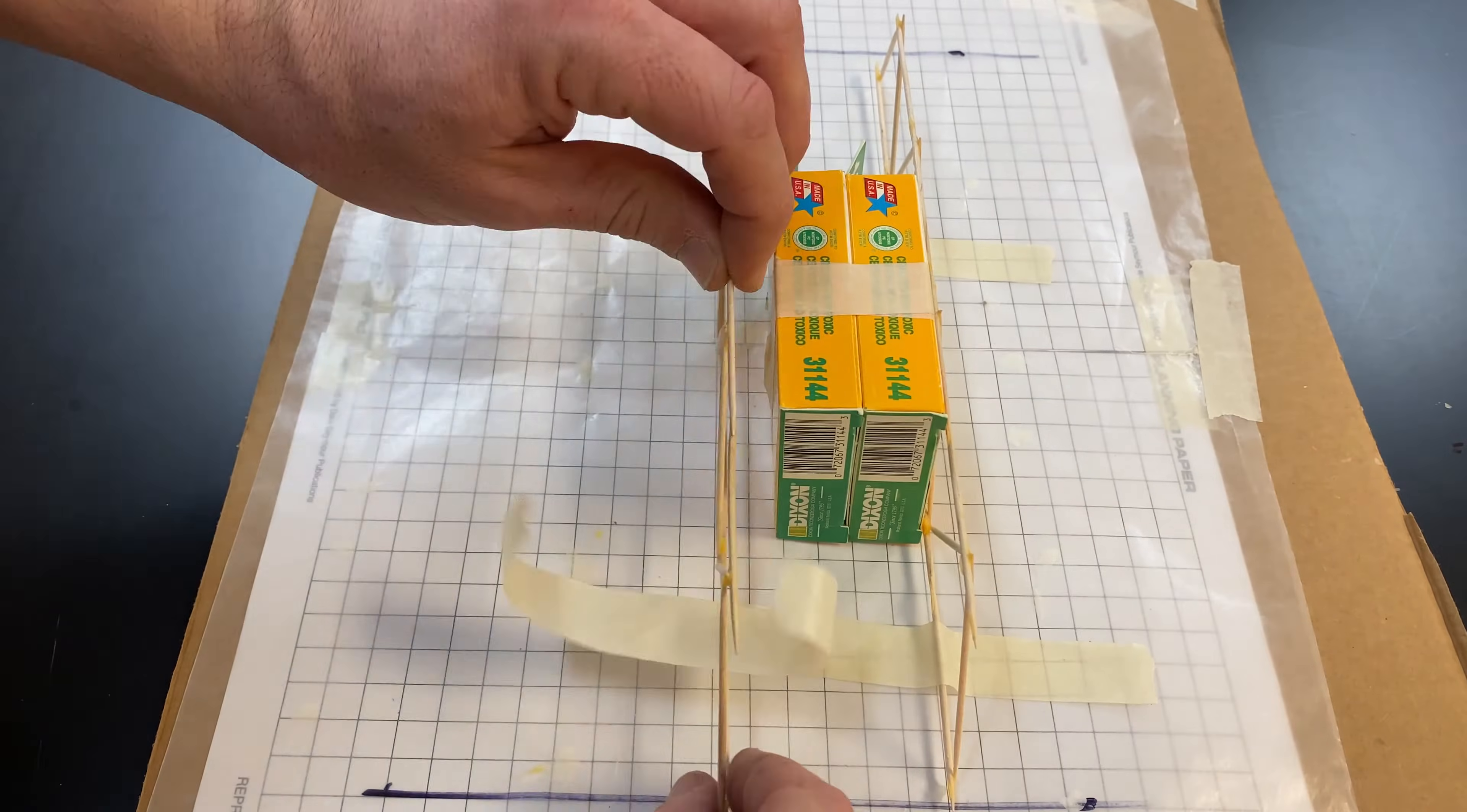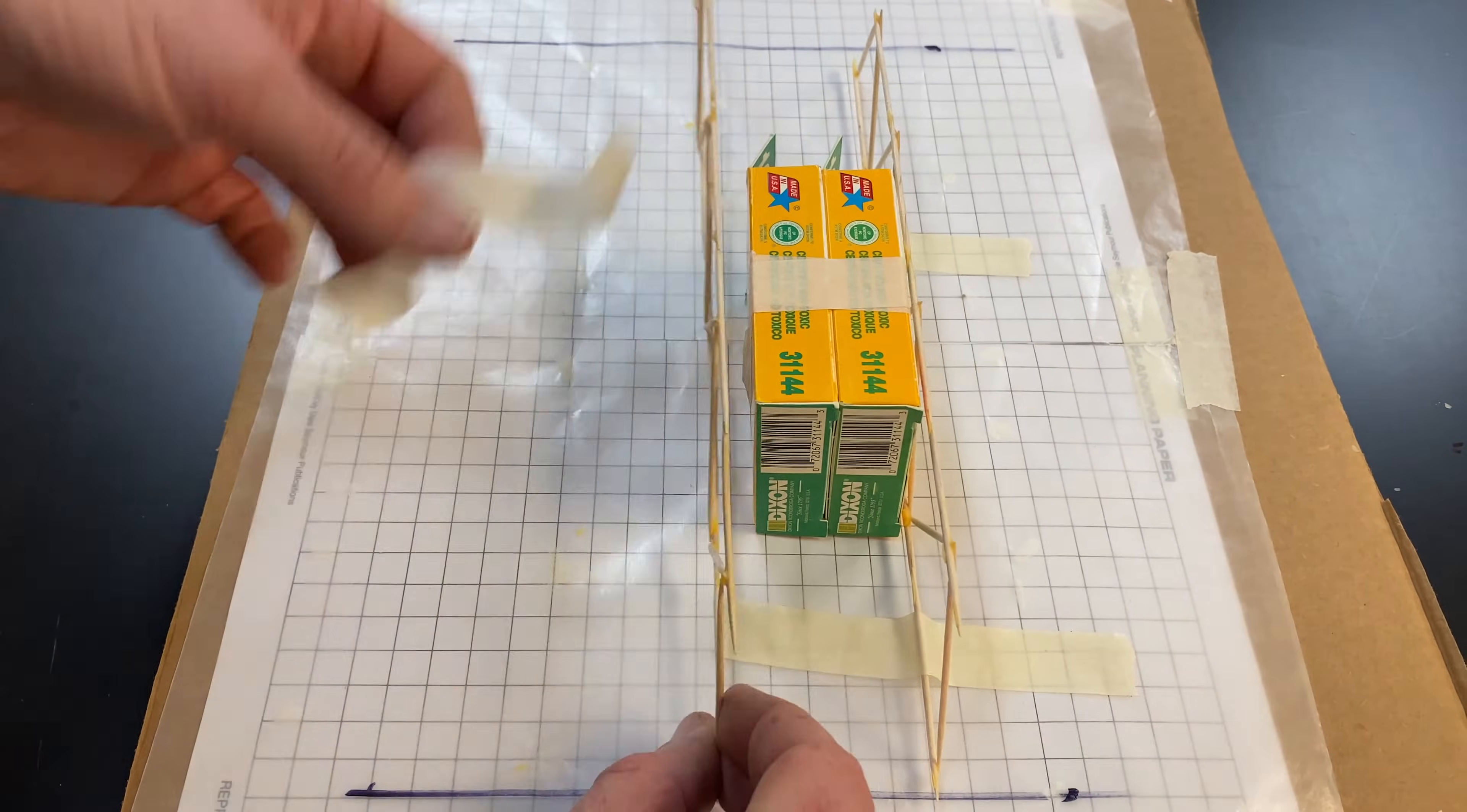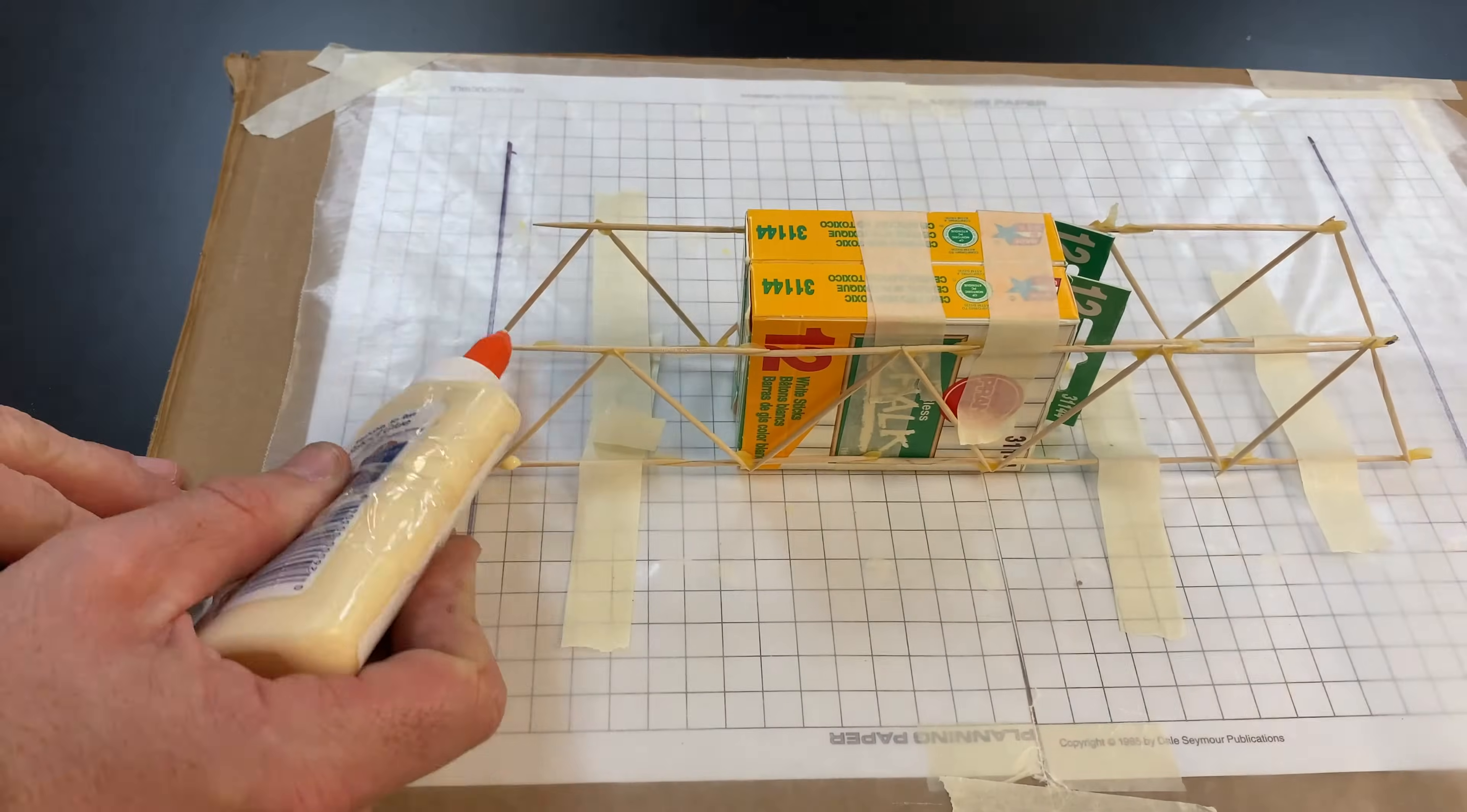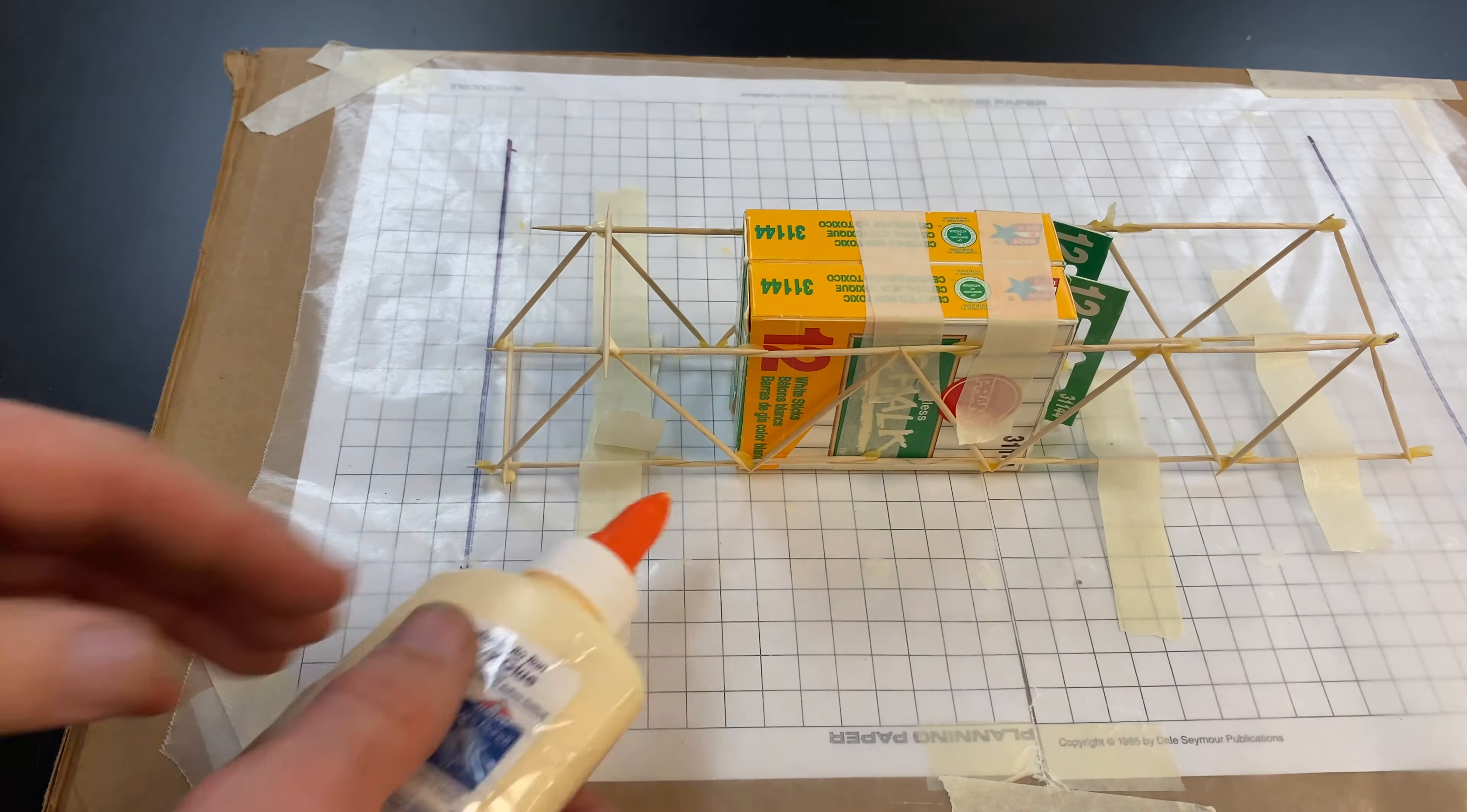Find a way to stand the two sides of your bridge upright. Tape them down so they don't move. Glue toothpicks across the bottom and top.